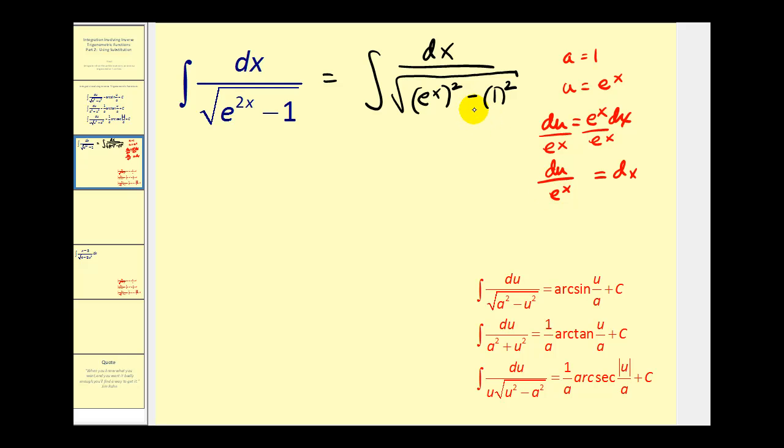Let's go ahead and try to rewrite this in terms of a's and u's. Let's start with the denominator. E to the x squared would be u squared, and one squared would be a squared. But dx is equal to du divided by e to the x. So if we put the du here, we should put an e to the x here. But remember, e to the x is equal to u, so we can replace e to the x with u. And now we can see that it doesn't fit the formula involving arc sine, but it does fit the formula involving arc secant.